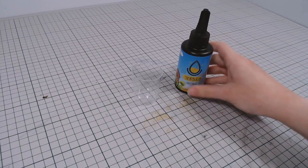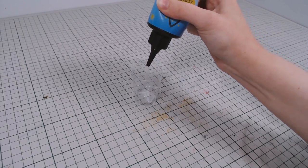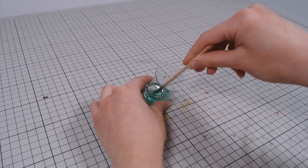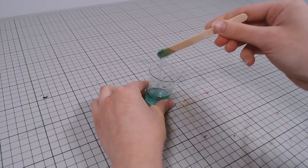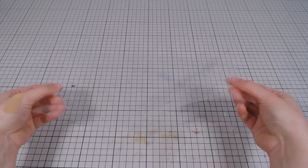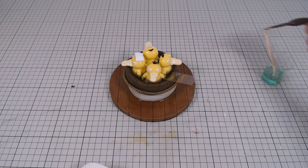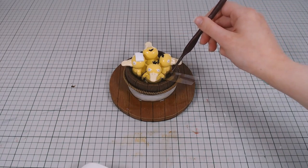For the water effects, I will be using UV resin and tinting it slightly green, and also some clear plastic. I cut out pieces of the plastic that will be the water spilling over and added them with UV resin.